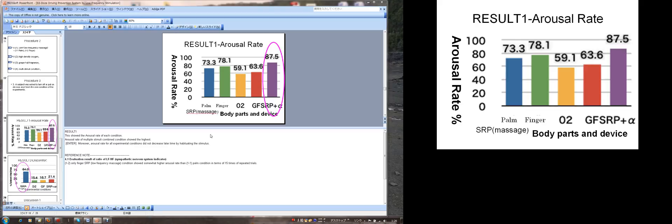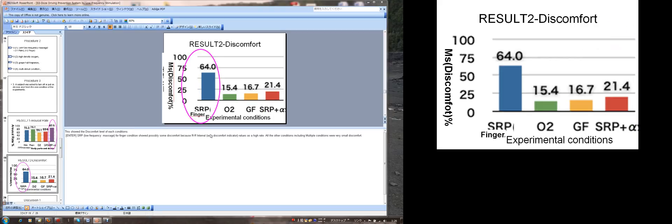Results. This showed the arousal rate of each condition. Arousal rate of multiple stimuli combined conditions showed the highest. Moreover, arousal rate for all experimental conditions did not decrease later time by habituating their stimulus. This showed the discomfort level of each condition. Only SRP as a low frequency massage for finger conditions showed the possibly some discomfort because RR interval as a discomfort indicator values as high. All the other conditions including a multiple stimuli conditions were very small discomfort.